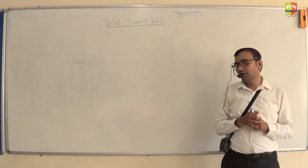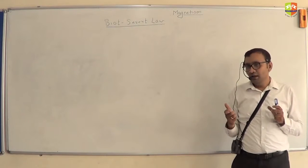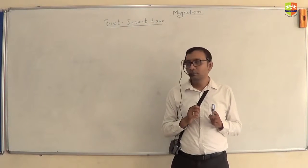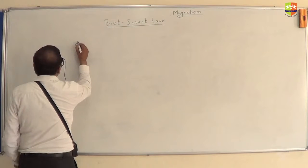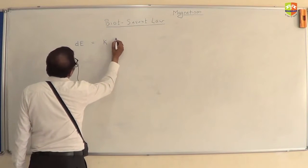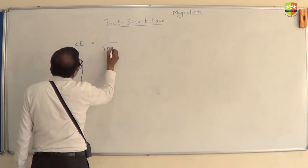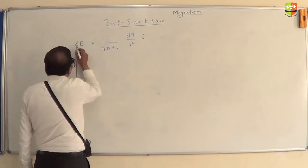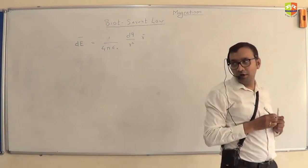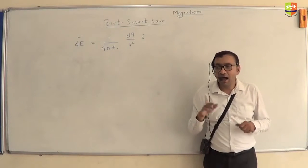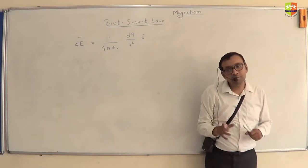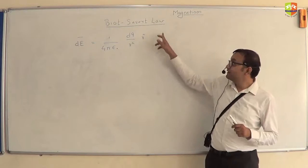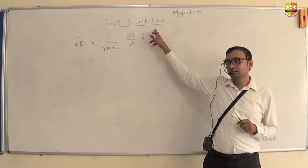Biot-Savart law helps you write the magnetic field in terms of current. It is like Coulomb's law — Coulomb's law tells you the force between two point charges, and from it you derive the electric field due to a point charge: E = (1/4πε₀) × dq/r². That is the formula for electric field in terms of charge. Biot-Savart gives a similar formula in terms of current.